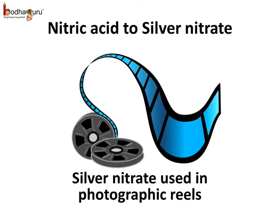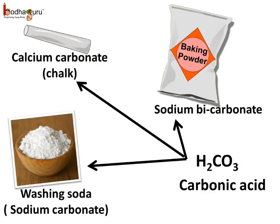Silver nitrate is used in developing photographic films and can also be obtained from nitric acid. A few other useful salts are washing soda and baking soda. Calcium carbonate, which is the main component of chalk, marble stone, and limestone, is also a salt. These salts can be obtained from carbonic acid, which is H2CO3.